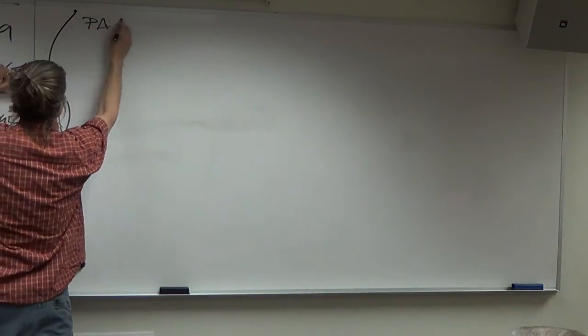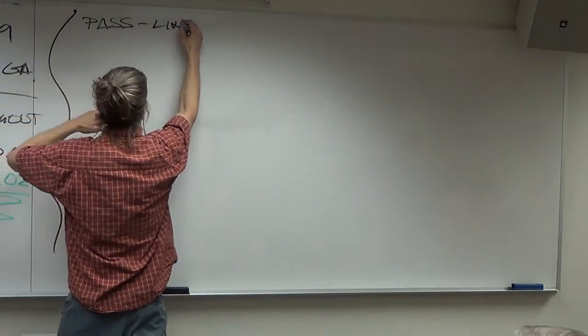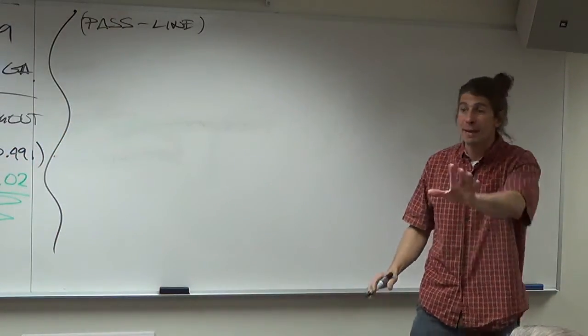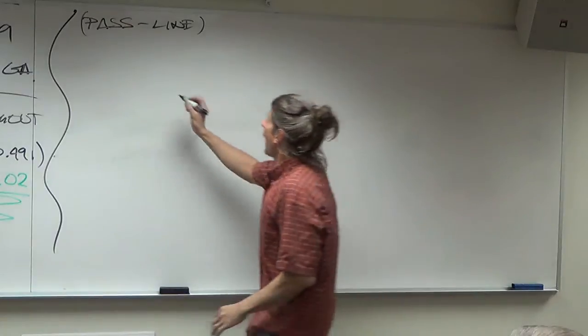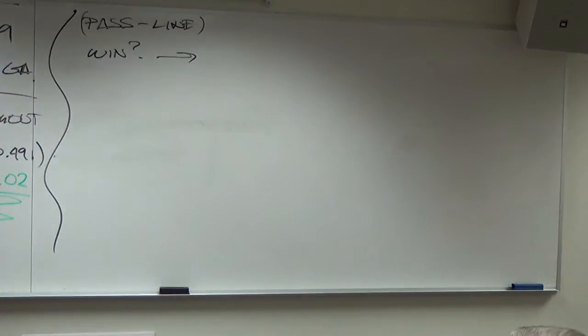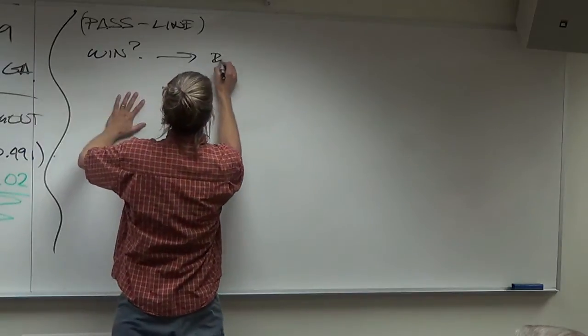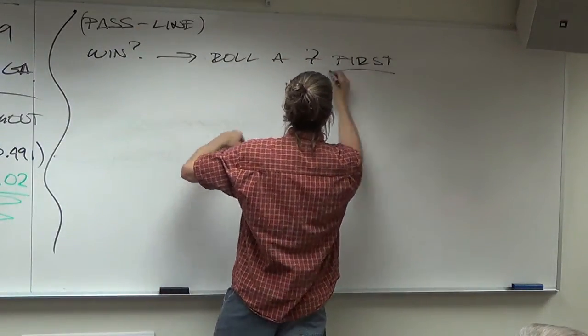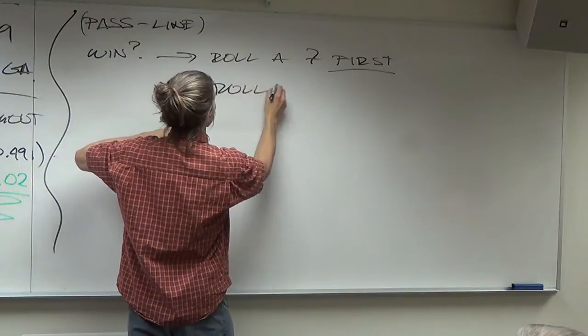For a pass line bet. What's that really mean again? Oh, I don't know what it means. I don't know why it's called a pass line. Well here's how you win, right? How do you win on a pass line bet? You roll a seven off the bat, roll a seven first, or roll an 11 first.